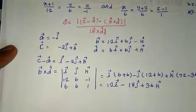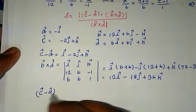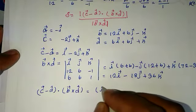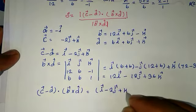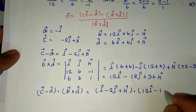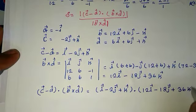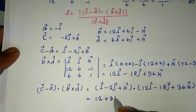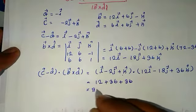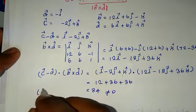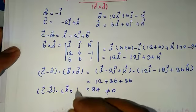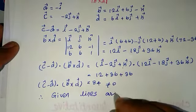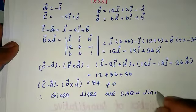Since the dot product is not equal to zero, the given lines are skew lines. Computing (c vector minus a vector) dot (b vector cross d vector): (i vector minus 2j vector plus k vector) dot (12i vector minus 18j vector plus 36k vector) equals 1 times 12, plus minus 2 times minus 18, plus 1 times 36, which equals 12 plus 36 plus 36 equal to 84. Since this is not equal to zero, the given lines are skew lines.